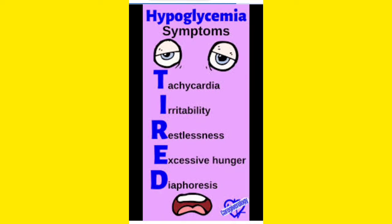Let me revise: the symptoms of hypoglycemia — decrease in blood sugar level. The mnemonic is TIRED: T-I-R-E-D. T means tachycardia, that means fast heartbeat. If the blood sugar level falls, your heartbeat will be very fast — that is tachycardia.